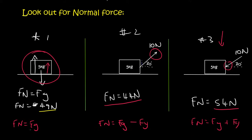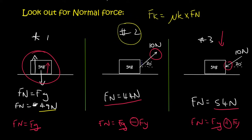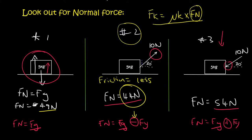Normal force is always going to be equal to gravity, and then you either subtract or add the y-component of the applied force. What's extremely important is that friction equals the coefficient multiplied by the normal force. So in situation two, your normal force is smaller because you're subtracting — and so if the normal force becomes less, your friction will become less.